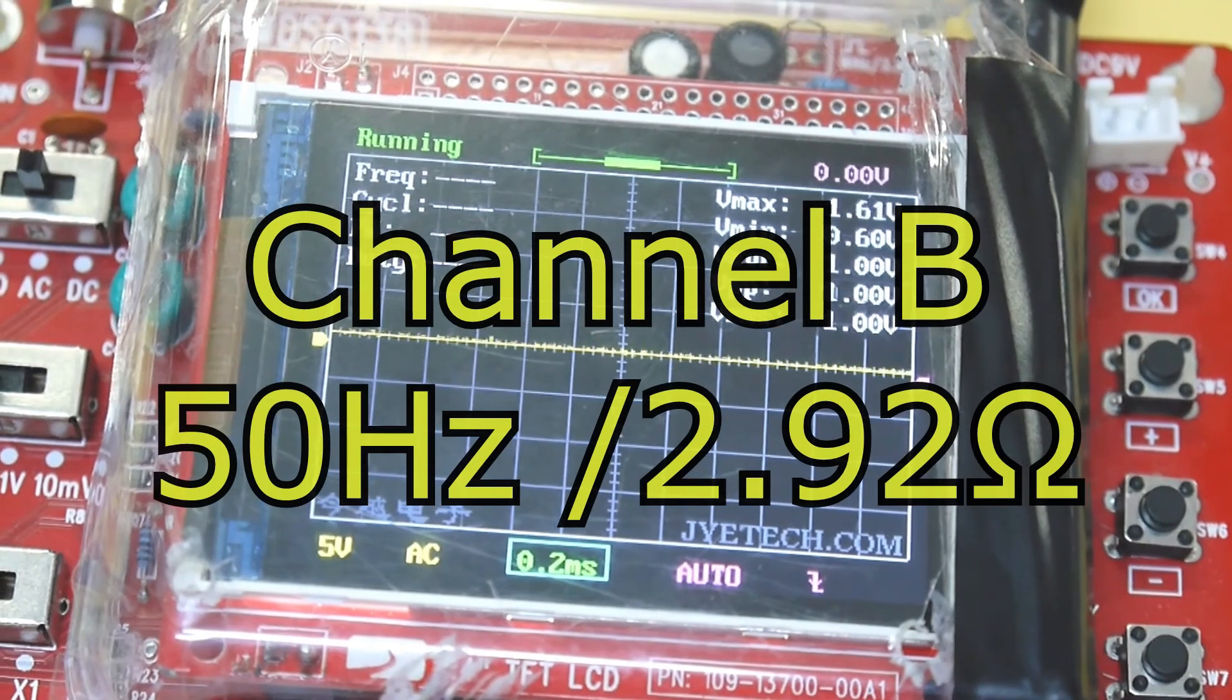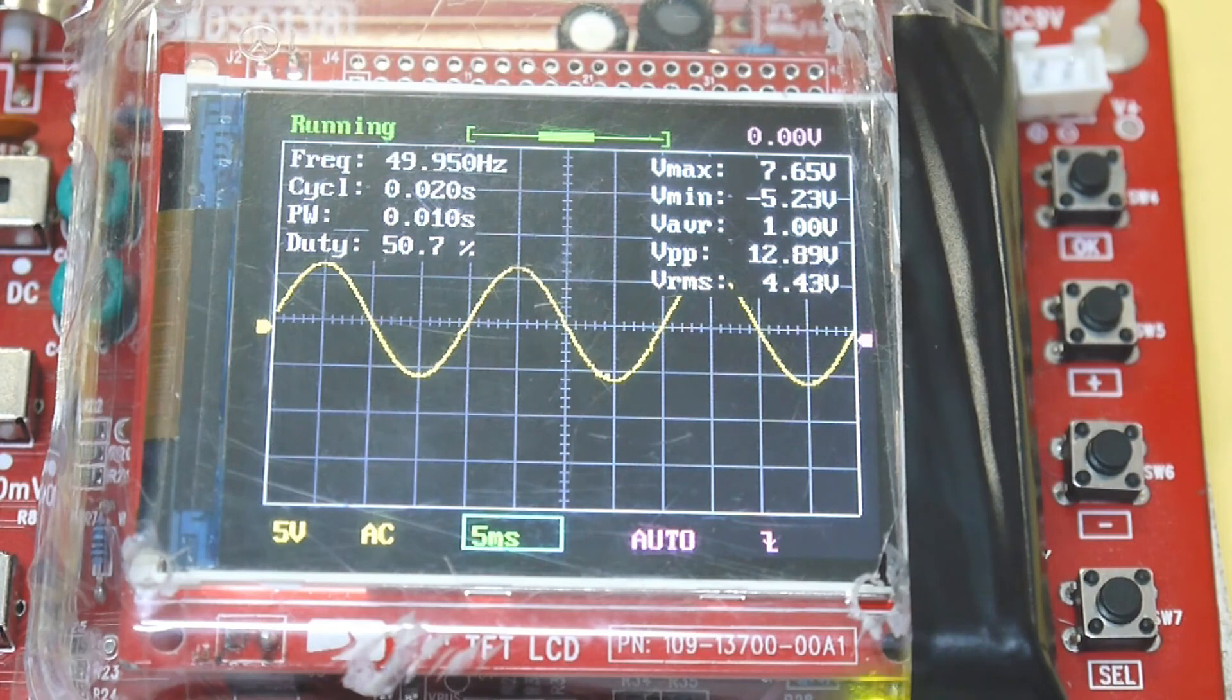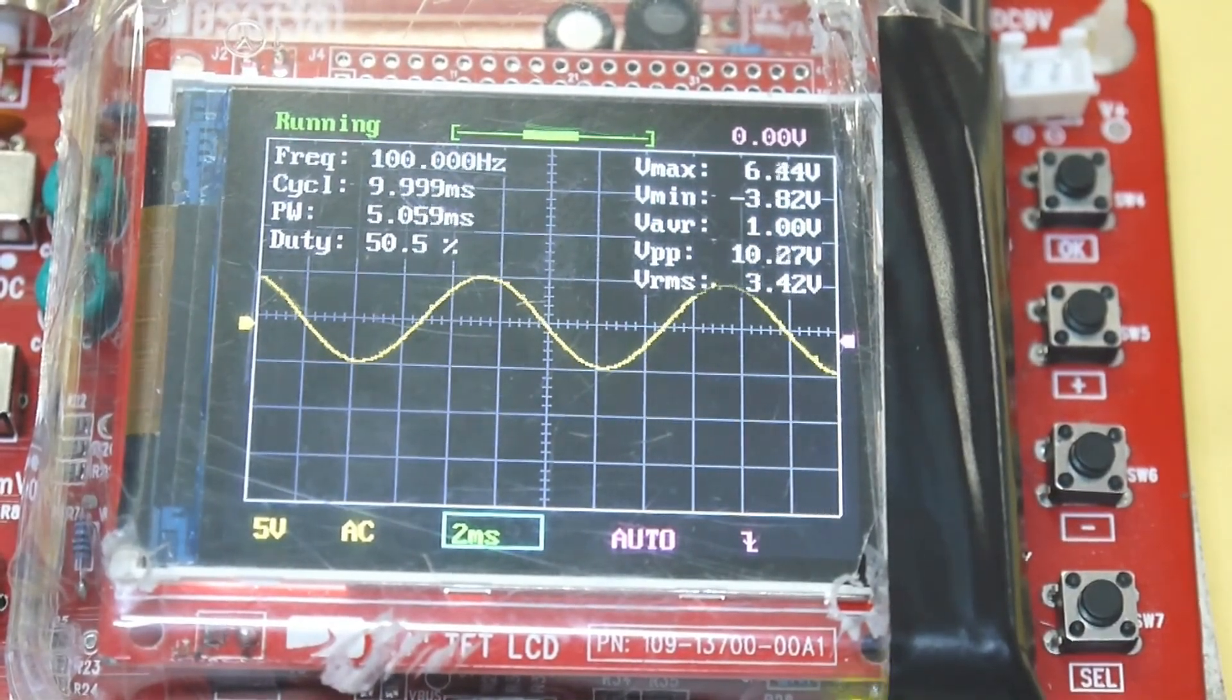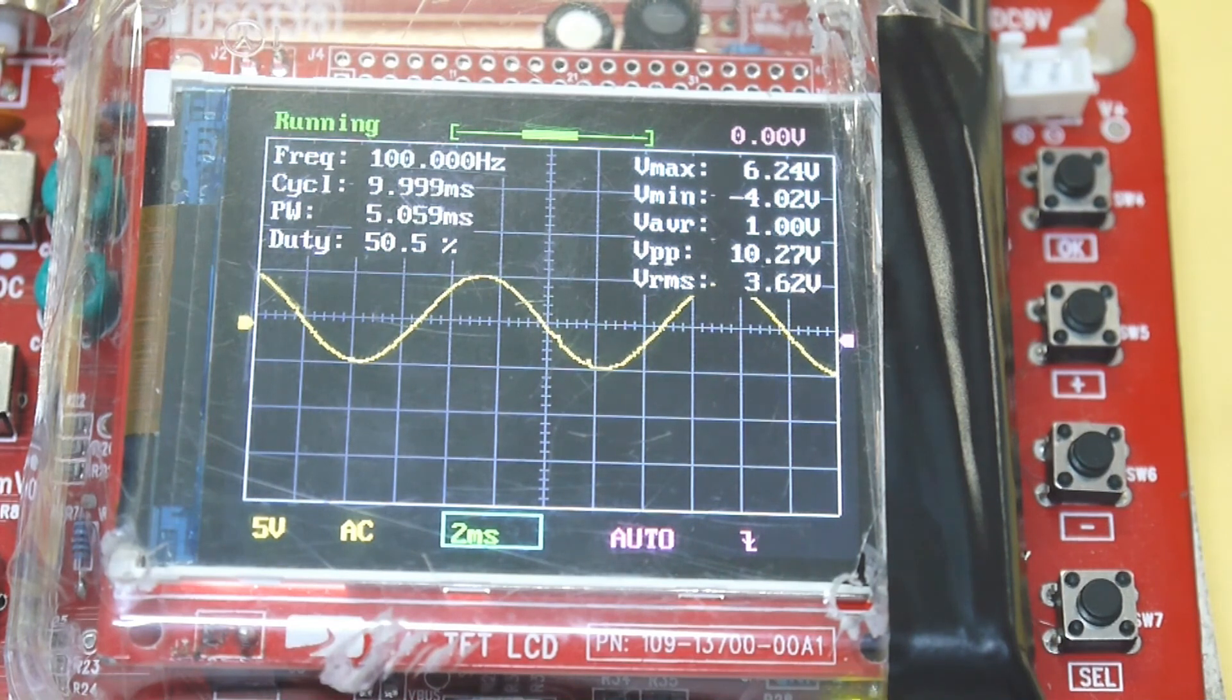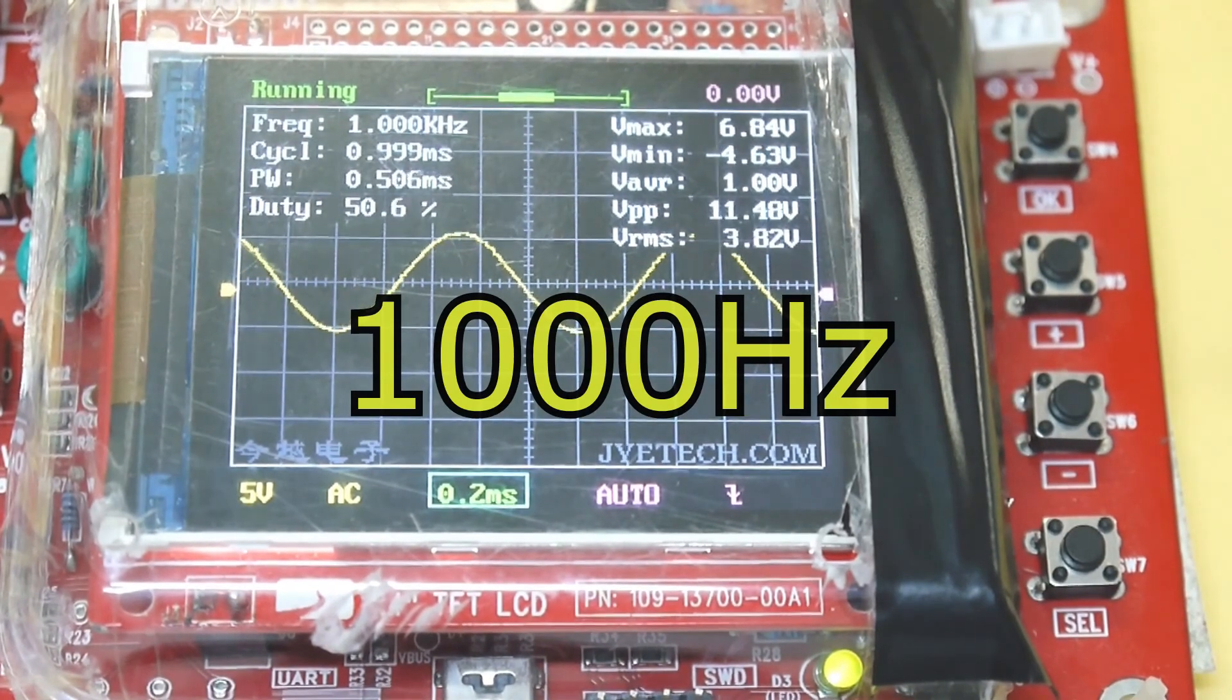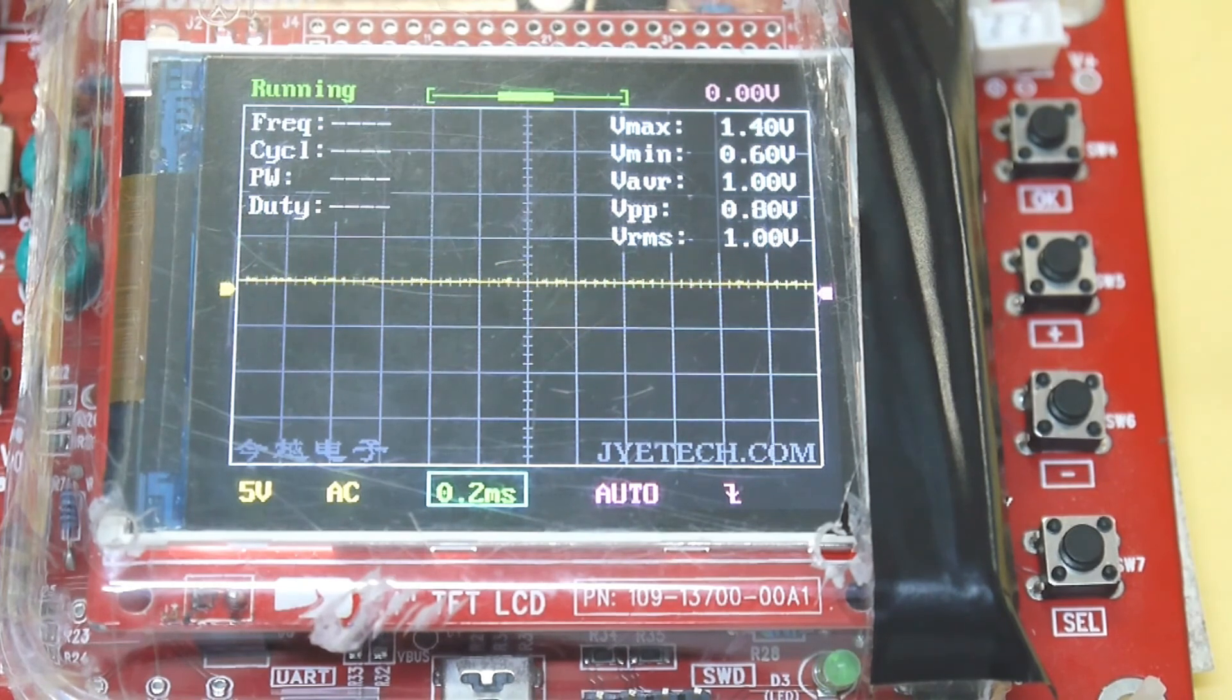Let's have the other channel now, we have 50 Hz. Now it's clipping. That was 50 Hz. Now let's have 100 Hz. 36 Hz. And finally, 1000 Hz. 5.6 Hz. That's it for this QSC USA Professional 1300.